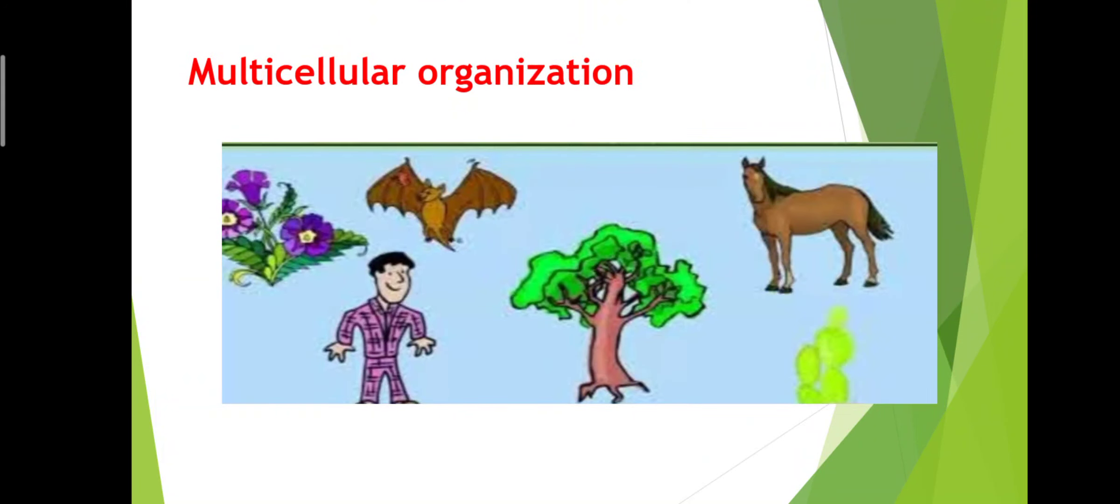Multicellular organizations. The examples of multicellular organization are plants, bats, trees, horse, and men. They all are examples of multicellular organization.